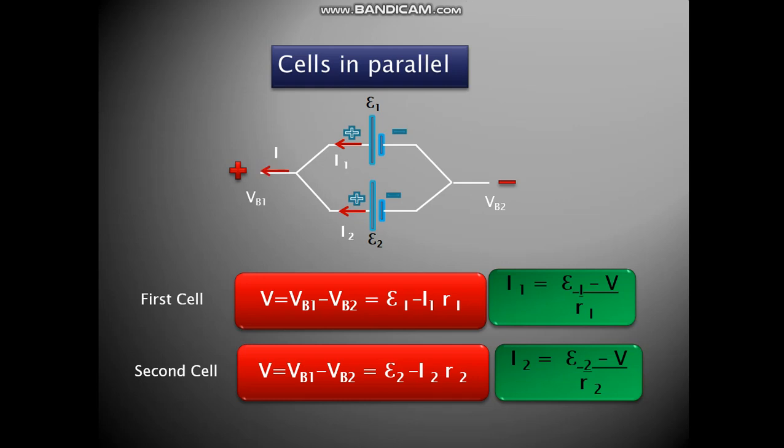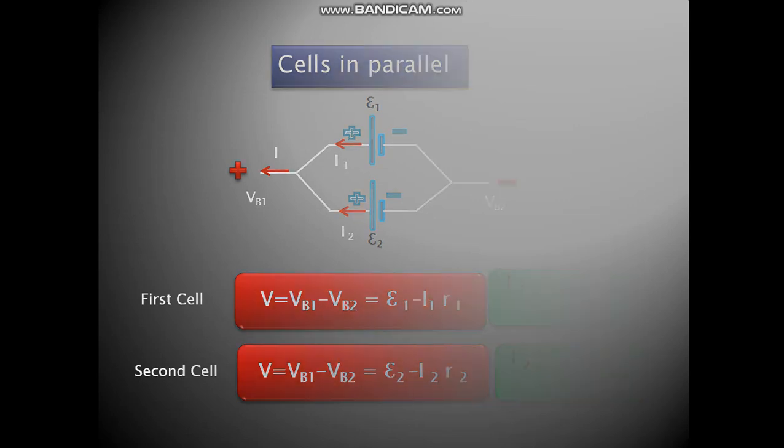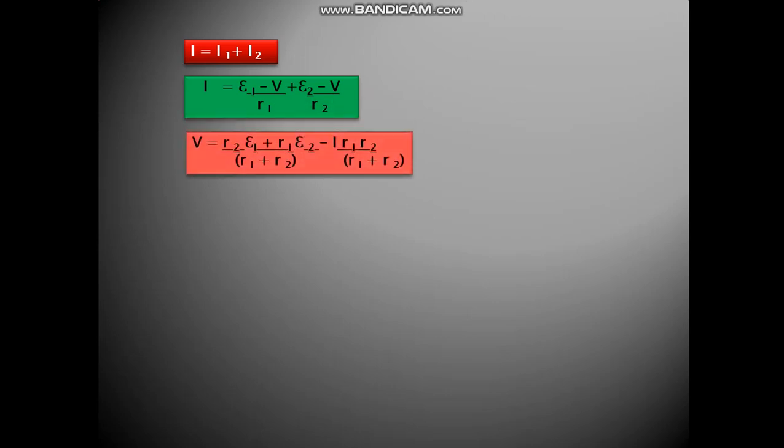Now we have the current I, which gets divided into I1 and I2. So I is equal to I1 plus I2. From the previous equations, if you substitute for I1 and I2, I is equal to E1 minus V upon R1 plus E2 minus V upon R2. So V is equal to, you rearrange the term and keep the V on the left-hand side, we get R2 E1 plus R1 E2 upon R1 plus R2 minus I into R1 R2 upon R1 plus R2.